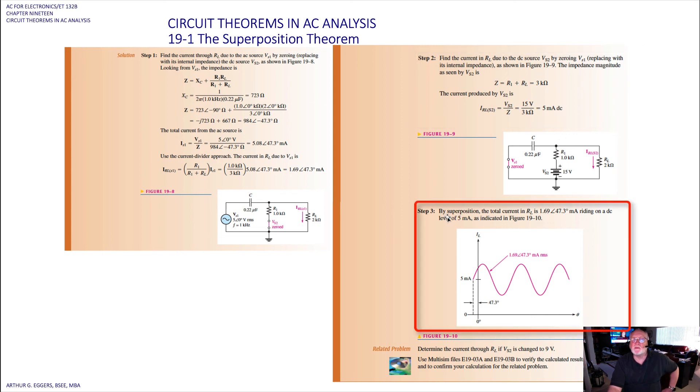Step 3 then, by superposition then, we can see that the total current in the load resistor RL is 1.69 at an angle of 47.3 degrees milliamps, riding on top of a DC level of 5 milliamps. So we can see here we've got our current in the inductor. We've got an angle here of 47.3 degrees leading, and the whole signal, the reference, is riding right on top of that 5 milliamps.